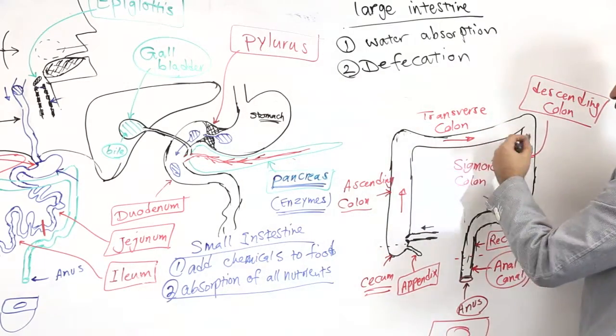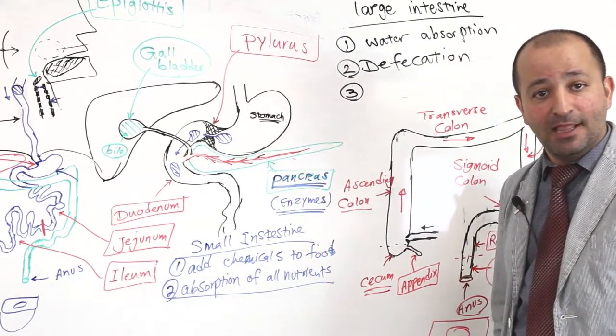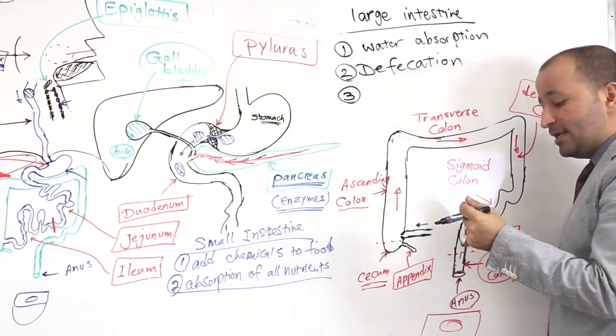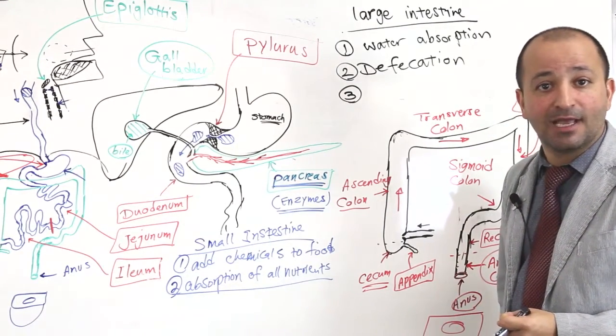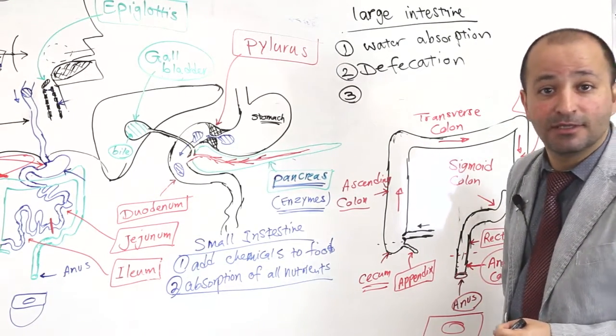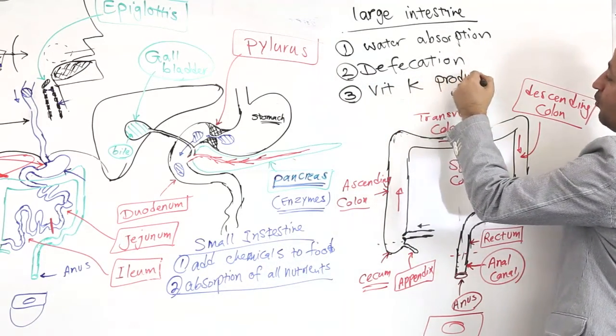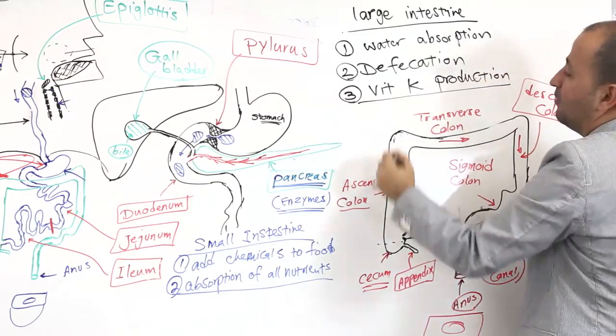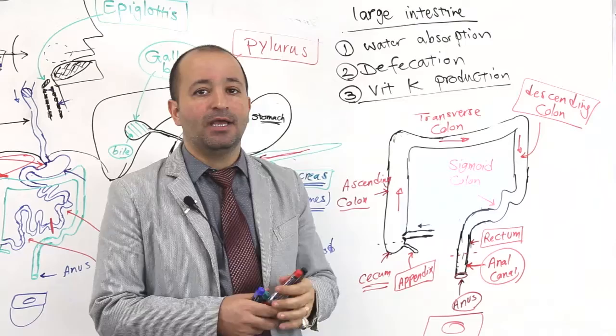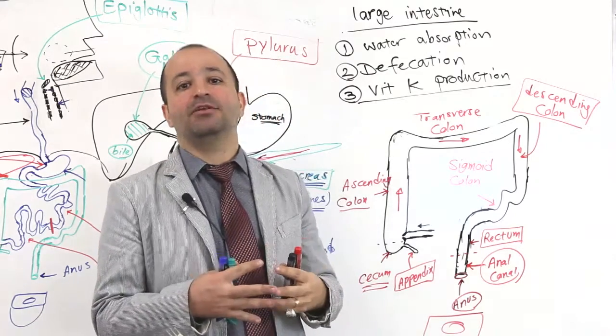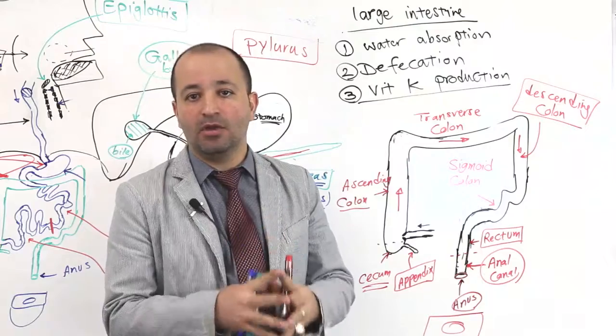There is another job of large intestine is happening here that is the production of a vitamin. Sometimes in some exams they ask you, vitamin? K. K. Beautiful. Vitamin K production. What is, what? How? Vitamin K production is happening by the normal bacteria living inside the large intestine.